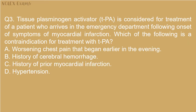Question 3: Tissue plasminogen activator (TPA) is considered for treatment of a patient who arrives in the emergency department following onset of symptoms of myocardial infarction. Which of the following is a contraindication for treatment with TPA? A. Worsening chest pain that began earlier in the evening. B. History of cerebral hemorrhage. C. History of prior myocardial infarction. D. Hypertension.